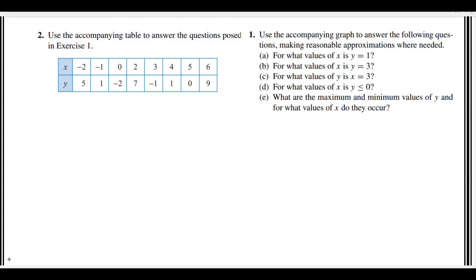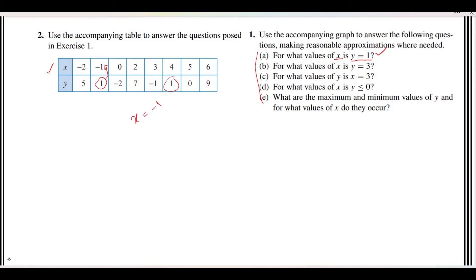Question number 2 says to use the given table for x and y to answer the questions. Part A asks for the x value when y is equal to 1. We look in the table for y equal to 1 — there are two instances. The x values corresponding to y = 1 are x = -1 and x = 4. That is the answer to Part A.